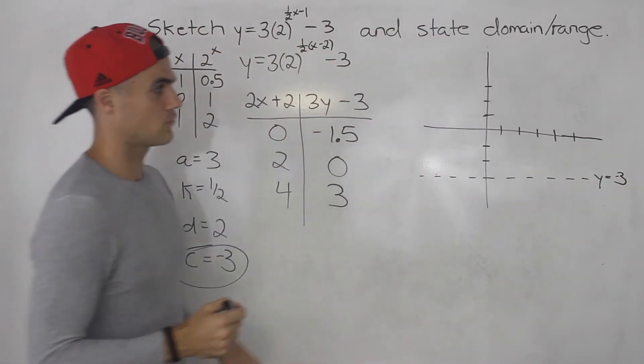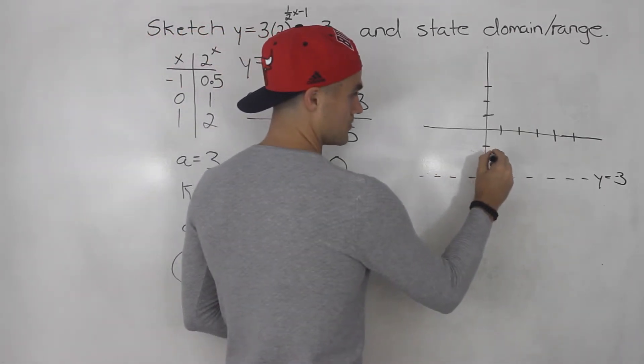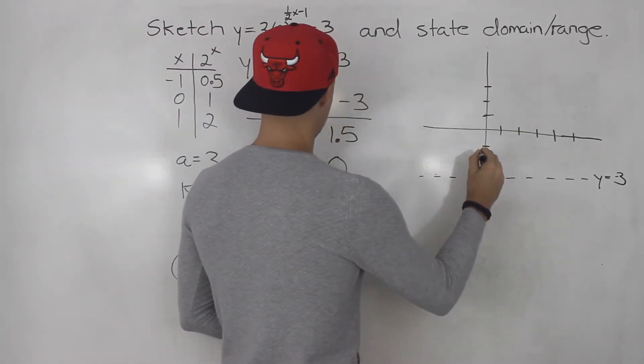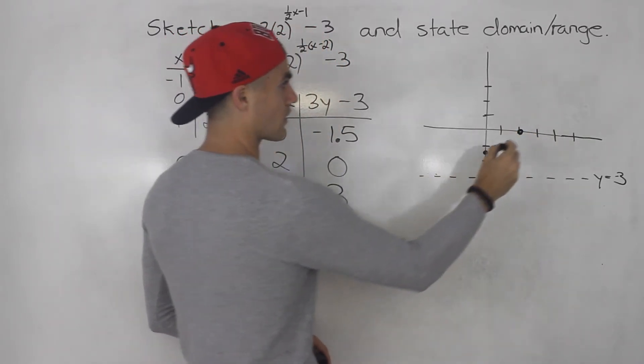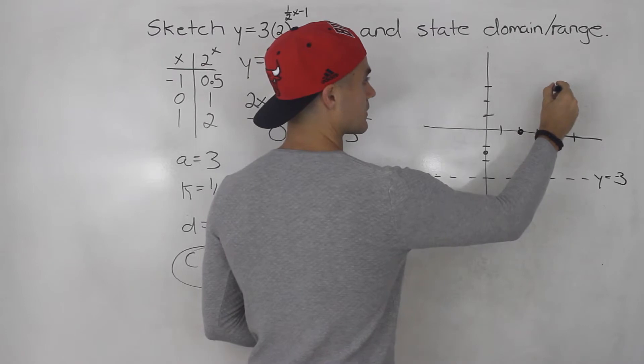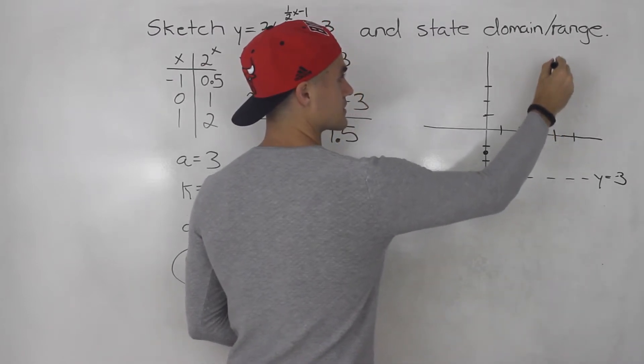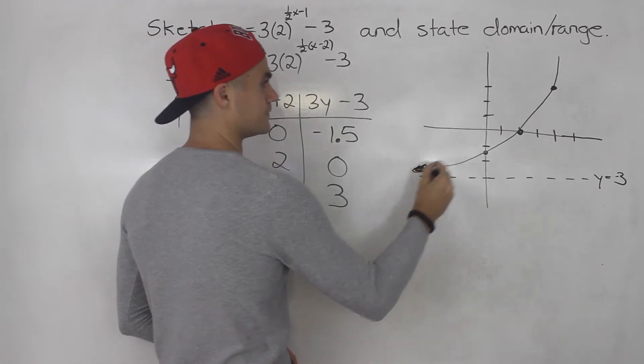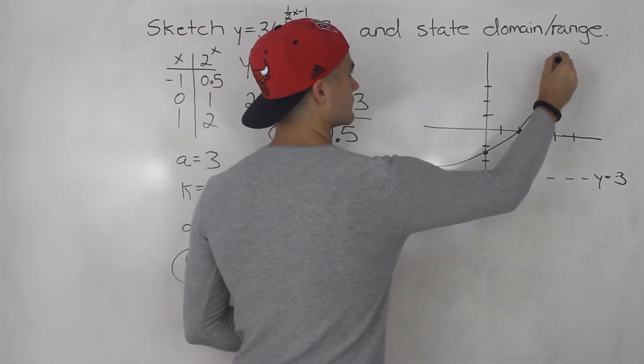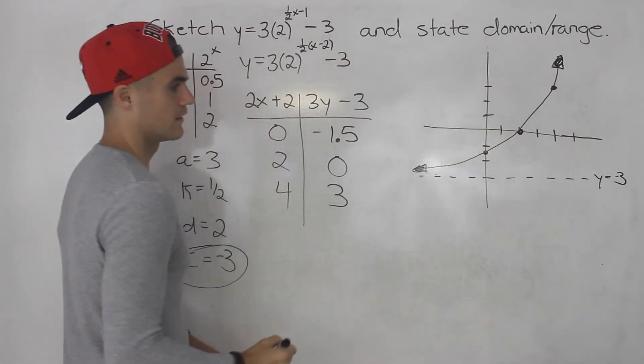0, negative 1.5. That would be over here. 2 and 0. That's like here. Then 4 and 3. That's like up here. So basically, this is like an exponential curve that's coming down like that.